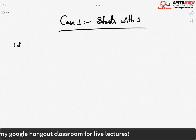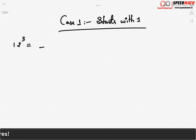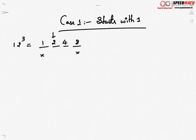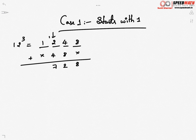Case 1 — number starting with 1. Let's take the example of 12³. Leave four positions. In the first two positions write the same digits as 12, so position 1 is 1, position 2 is 2. In the third position write the square of the units digit: 2² = 4. In the last position write the cube of 2: 2³ = 8. Step 2: leave the first and last numbers and double whatever is in the middle — 2 doubled is 4, 4 doubled is 8. Step 3: add everything — 8 stays, 8 + 4 = 12 (write 2, carry 1), 4 + 2 + 1 = 7, and 1 stays. So 12³ = 1728.